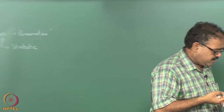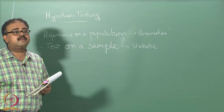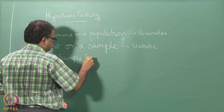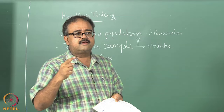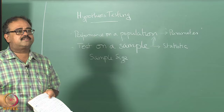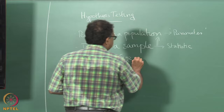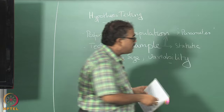What factors influence how confident you can be about the parameter from the statistic? Sample size is one factor — something under your control. Variance of the underlying distribution is another — something not under your control, so you may need a larger sample to compensate for high variability.